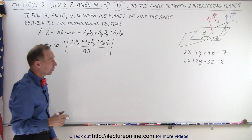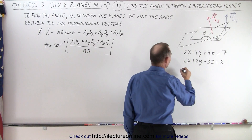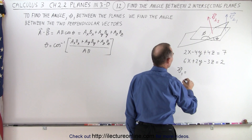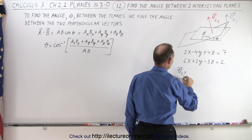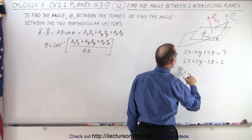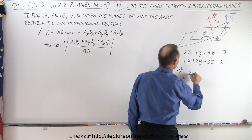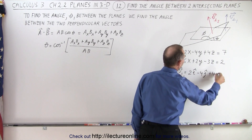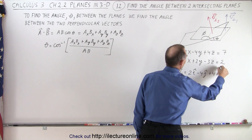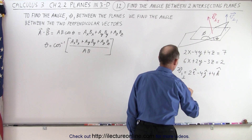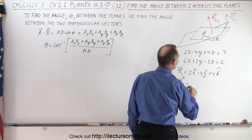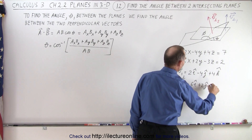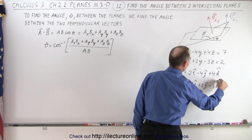First we need to find the two vectors. Vector 1 perpendicular is going to be equal to 2 in the I direction, minus 4 in the J direction, plus 4 in the K direction. And vector 2 perpendicular is going to be equal to 6 in the I direction, plus 2 in the J direction, minus 3 in the K direction.